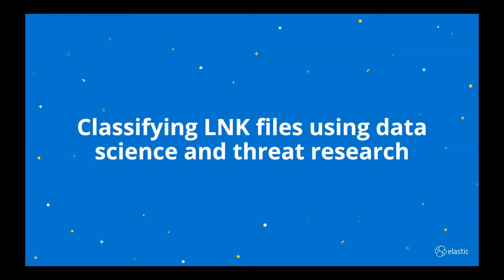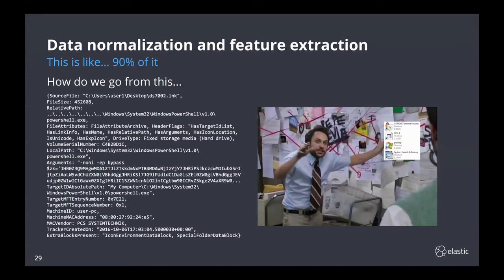One way to approach the problem of identifying link files as malicious or benign is to call it a classification problem. While examining several link files and identifying features that make them stand out as suspicious, we tried to build our own classifier using data science techniques. The next few slides show a practitioner's attempt to use machine learning to classify link files and explain the process from start to finish. My goal is to show practitioners how accessible data science techniques are and that machine learning can be effective at solving a problem most of the time — but it's not a silver bullet. When we were parsing link files and identifying important features, we were doing feature extraction — essentially transforming domain knowledge into features and then applying machine learning techniques.